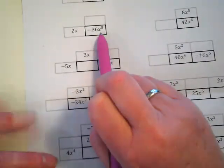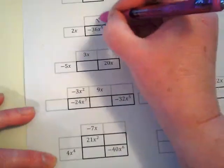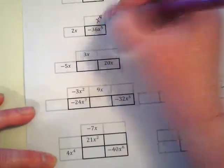That means if this here is x to the 5th, and this is an x, this has to be something that has an x to the 4th.